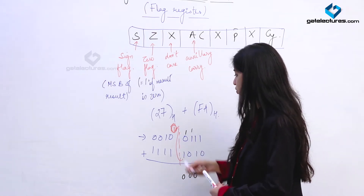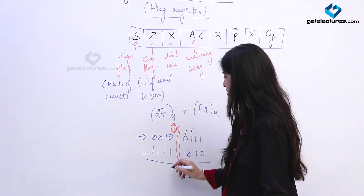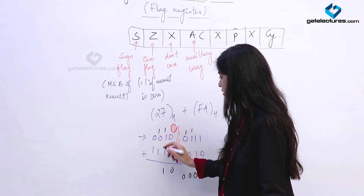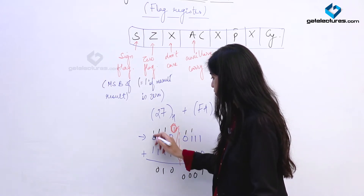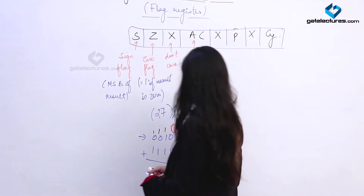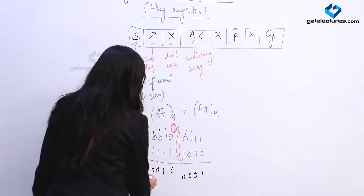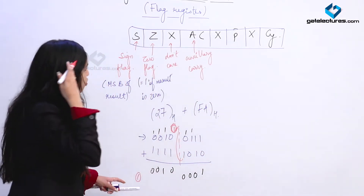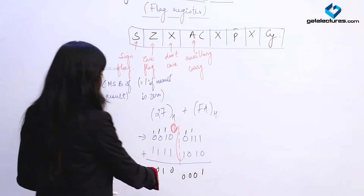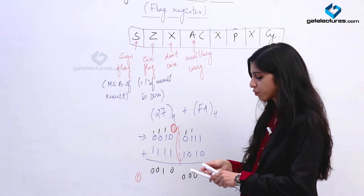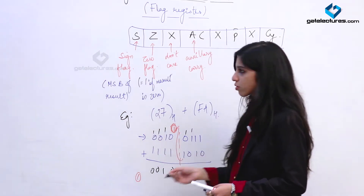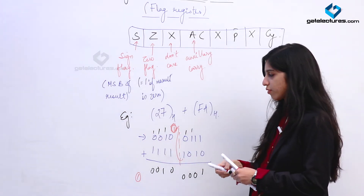Completing the addition: 1+0 is 1, 0+1 is 01, giving us 1 1 0 1 0 and a carry of 1. Now let us look at all the flags and see what will be the status of the flags for this given example of 27 plus FA.